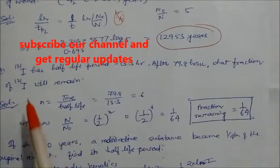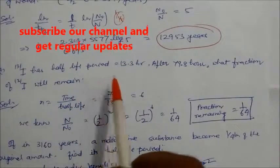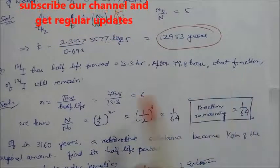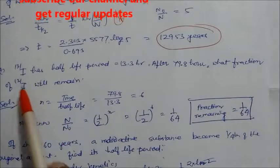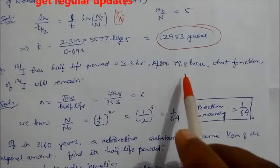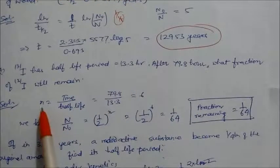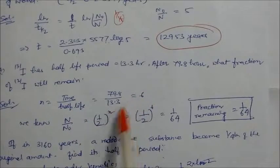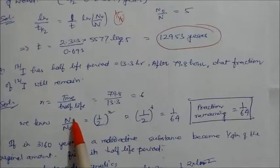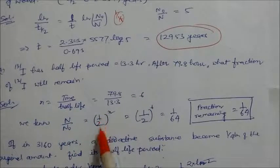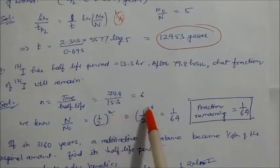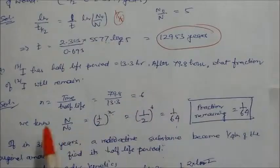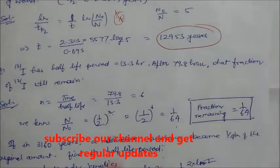Problem 4: Iodine-131 has a half-life of 13.3 hours. After 17.8 hours, what fraction of iodine-131 will remain? The number of half-lives = time divided by half-life. This gives n = 6. Using N/N₀ = (1/2)^n, with n = 6, the fraction remaining is 1/64.